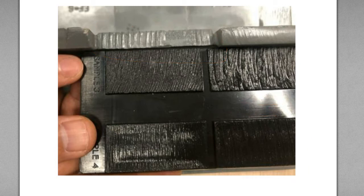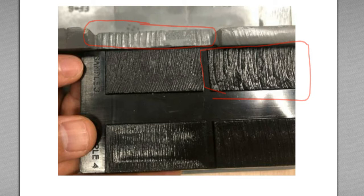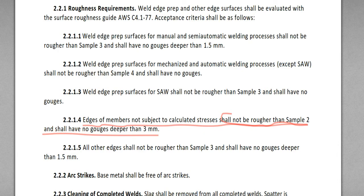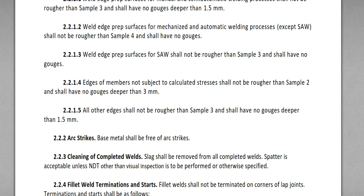For example, this cut surface is kind of finer than sample number 1 — this is ambiguous, I'm not sure, I can't tell exactly. But as I said, this kind of question comparing roughness is very clear in CWI Part B questions — comparing this cut surface to sample 3 or sample 4, very simple questions. This was 2.2.1.4. Let's go to 2.2.1.5.